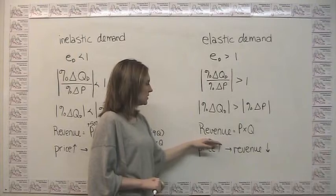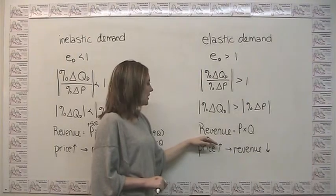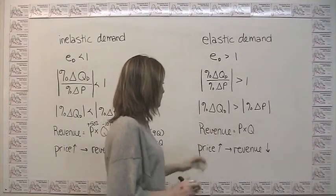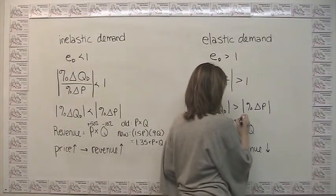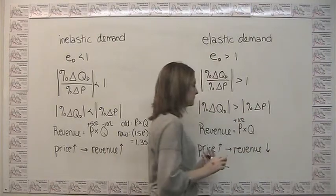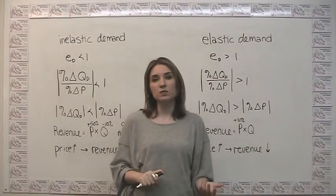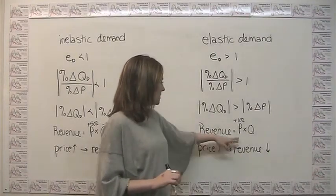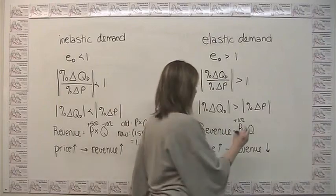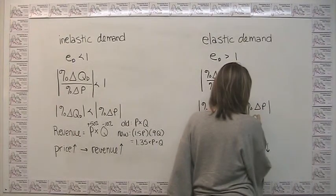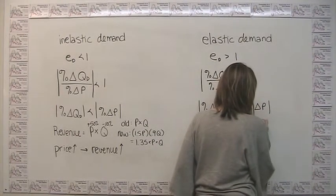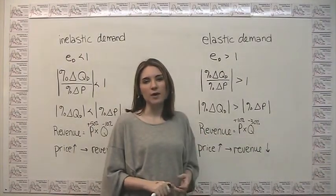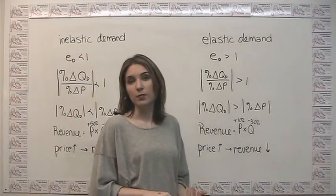So in this situation here, again consider revenue. Elastic demand, for example, would be a situation where if we even raised our price by, let's say, 10%, we would see our quantity decrease by something greater than 10%. So maybe when our price goes up by 10%, our quantity demanded goes down by, oh, I don't know, let's say 30%. So now we can again think mathematically about what happens to revenue in response to an increase in price.